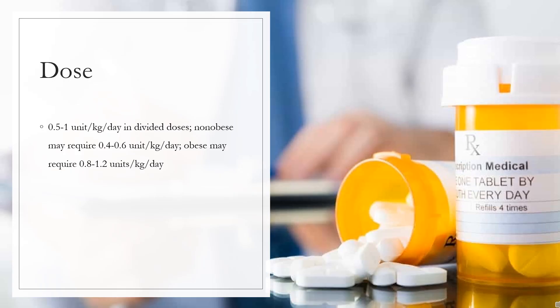Dose: Type 1 Diabetes Mellitus: Usual daily maintenance range is 0.5 to 1 unit/kg/day in divided doses. Non-obese may require 0.4 to 0.6 unit/kg/day. Obese may require 0.8 to 1.2 units/kg/day. Intermediate or long-acting insulin, approximately one-third of the total daily insulin requirements subcutaneously. Rapid-acting or short-acting premeal insulin should be used to satisfy the remainder of the daily insulin requirements.